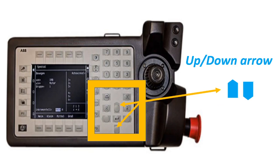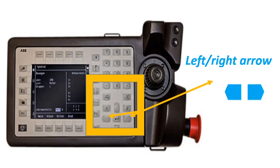Up and Down Arrow Keys: press this key to move the cursor up and down. Left and Right Arrow Keys: press this key to move the cursor to the left or to the right.